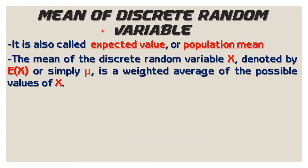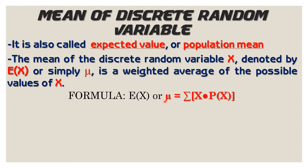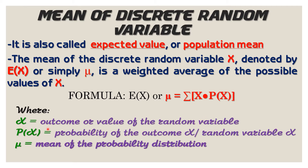Now, let's talk about the mean of a discrete random variable. It is also called the expected value or the population mean. The mean of this random variable x is denoted by E(x) or the Greek letter mu. It is just a weighted average of the possible values of random variable x. Our formula for the mean is E(x) or mu equals the summation of x times P(x), wherein capital X is the outcome or value of the random variable, P(x) is the probability of the outcome, and mu is the mean of the probability distribution.